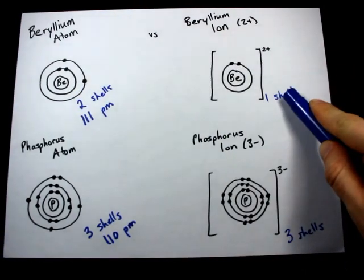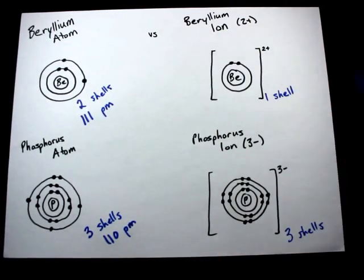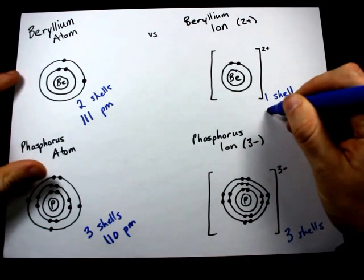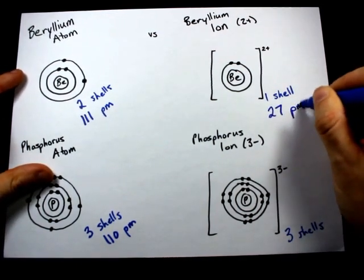This only has one shell. You should expect it to be smaller, and it is. The beryllium 2 plus atom has a size of only 27 picometers.